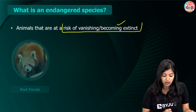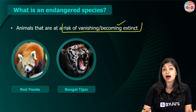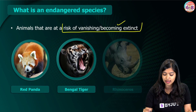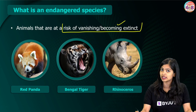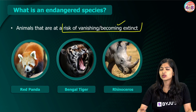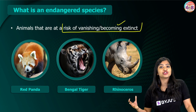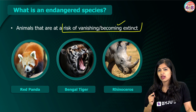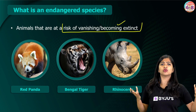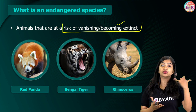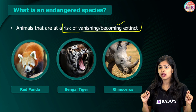Pandas were once an example of endangered species. Some other examples include the red panda, the Bengal tiger, and of course the rhinoceros. So these are some examples of endangered species.